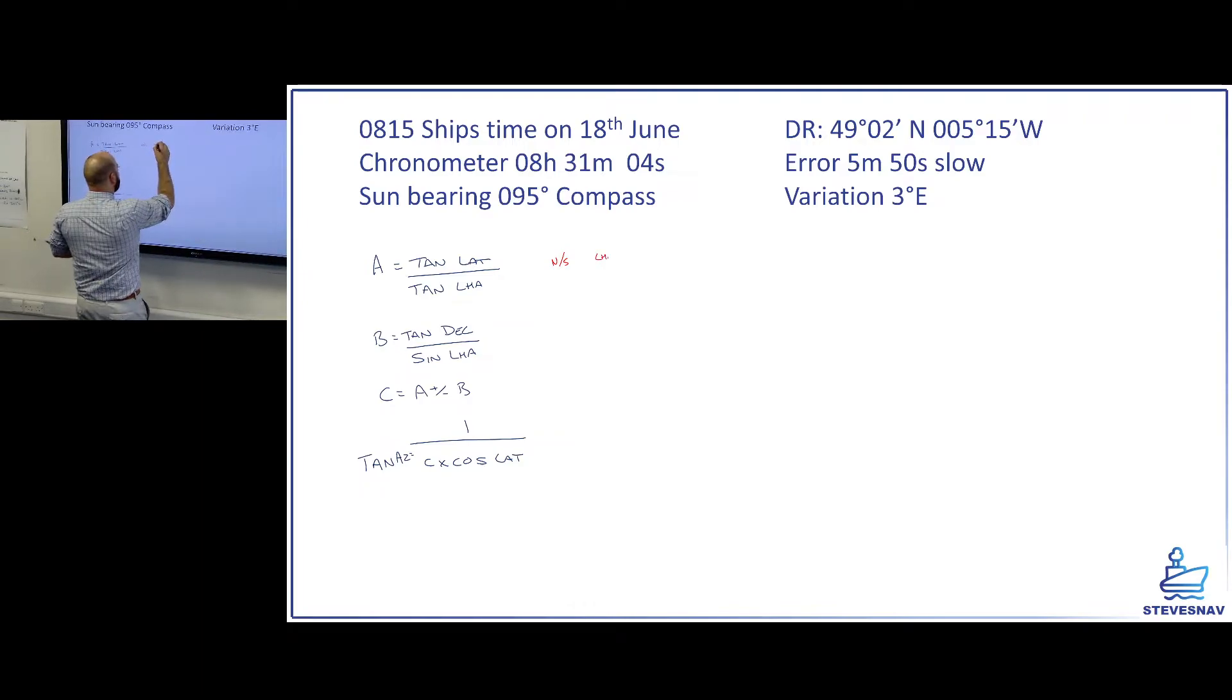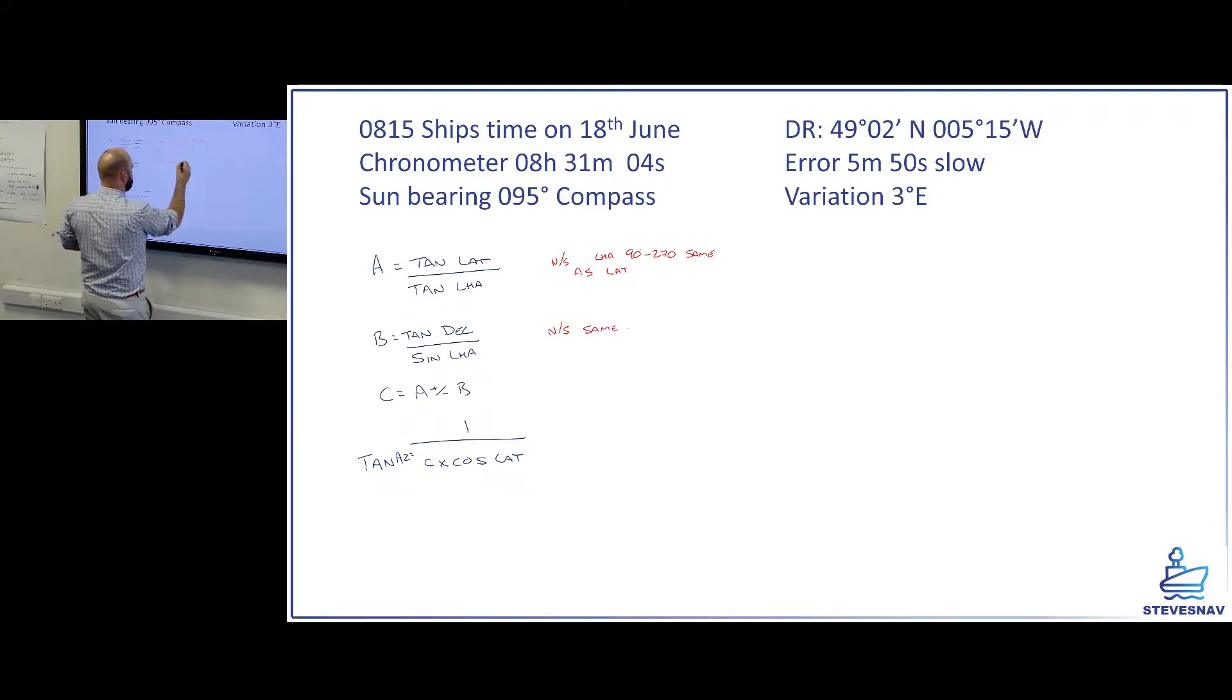So LHA 090 degrees to 270 degrees, it's the same as your lat. And it tells you this in Norris if you check the tables on page 380 in the version Norris we use at the college. B is going to be named North or South, the same as declination. And C, we're going to do the same names. We're going to add them. Different names, we're going to subtract them. And then we're going to name them the greater.